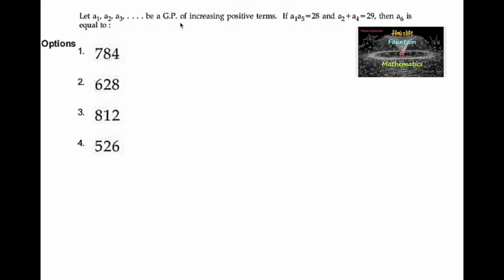a1, a2, a3 be a geometric progression of increasing positive terms, and a1·a5 is equal to 28, and a2 plus a4 is equal to 29. Then we need to find a6. Let us consider a1 equal to a, where a is the first term.